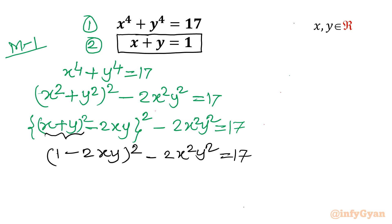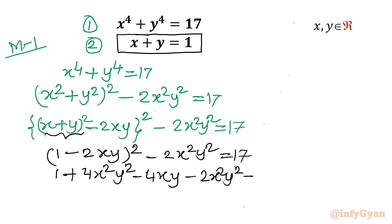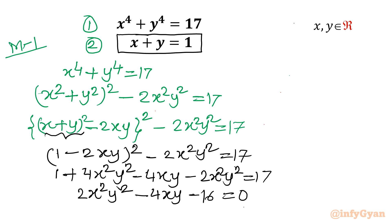Expanding (1 − 2xy)² using the identity (a − b)² = a² − 2ab + b², we get 1 − 4xy + 4x²y² − 2x²y² = 17, which simplifies to 2x²y² − 4xy − 16 = 0. Dividing by 2 gives x²y² − 2xy − 8 = 0.